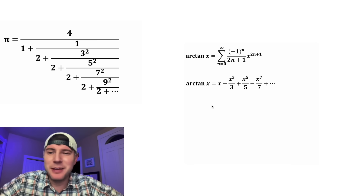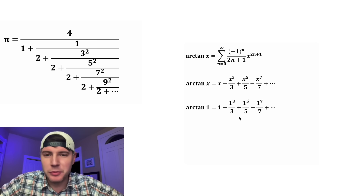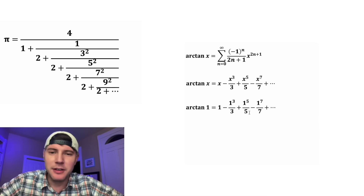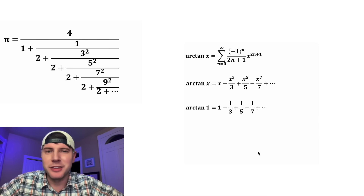For the next step, let's plug in 1 for x. So it'll be arctan of 1, and that's going to equal 1 minus 1 cubed over 3, plus 1 to the fifth over 5, minus 1 to the seventh over 7, and so on. Each of these on top will just be 1, and we can combine everything together.